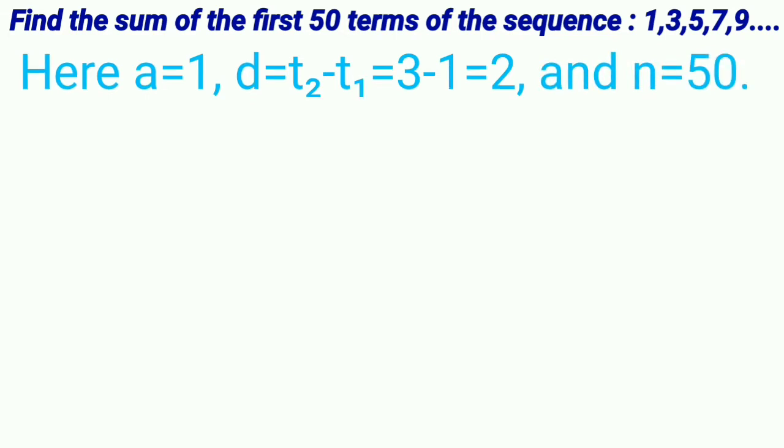Here, a is equal to 1, d is equal to t2 minus t1, that is equal to 3 minus 1, equal to 2, and n is equal to 50.